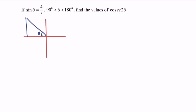Here, sin θ is opposite over hypotenuse, where we have 4 for the opposite and 5 for the hypotenuse. Based on the Pythagorean theorem, the adjacent side will be negative 3.